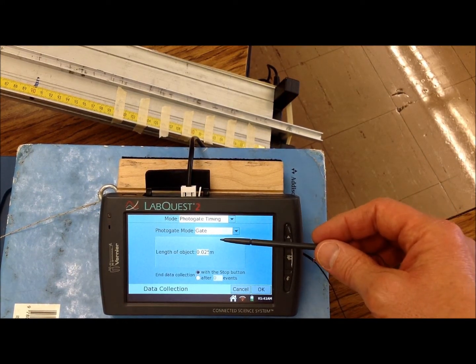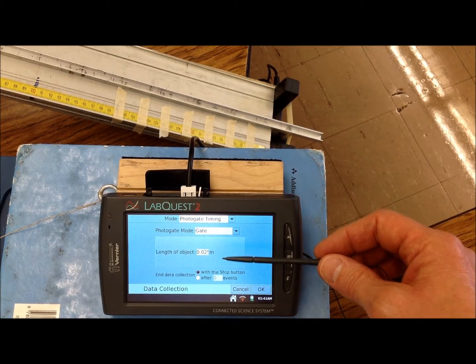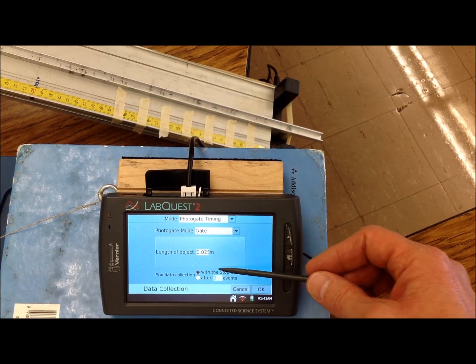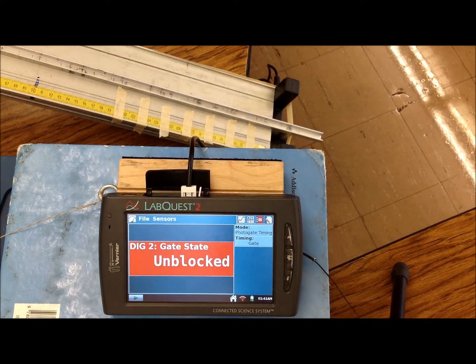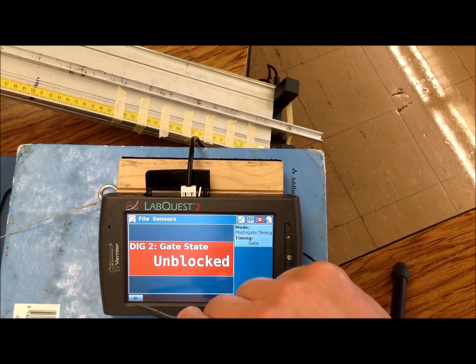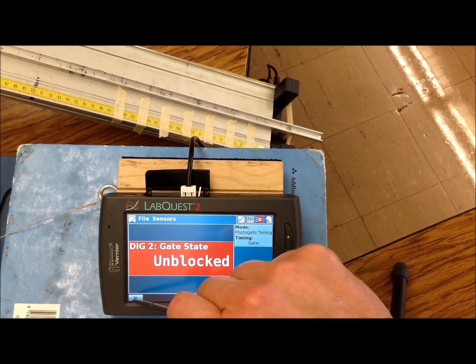So we have photogate timing, we're gate, .025 meters long, and we're going to start in data collection with the stop button. So hit OK. Yours should say that.